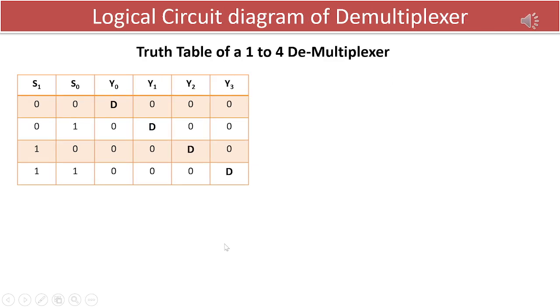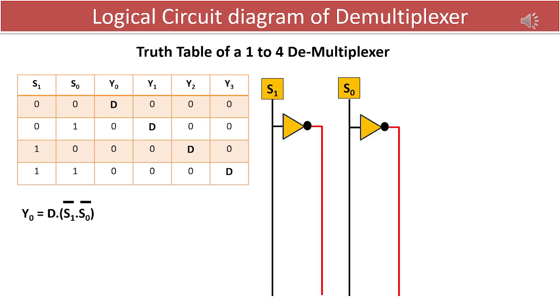We can implement the D multiplexer using basic logic gates as shown in the figure. We would require two NOT gates which provide the complements of s1 and s0. To implement the min term Y0, we need a 3 input AND logic gate, one of the input will get connected to s1 bar and another to s0 bar.